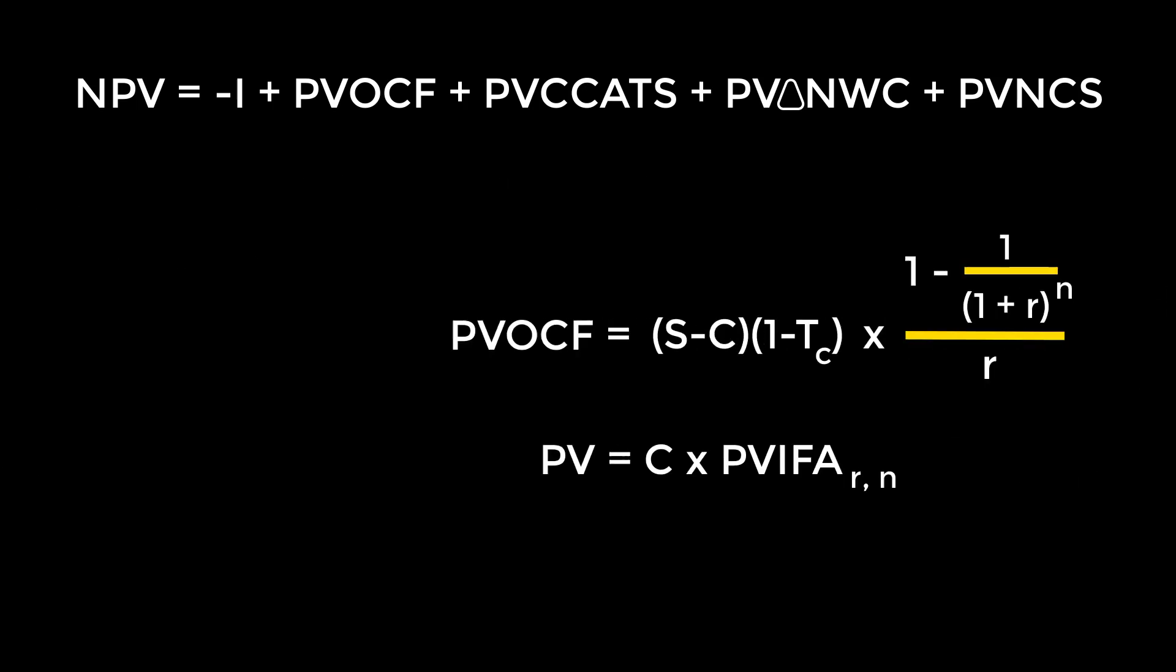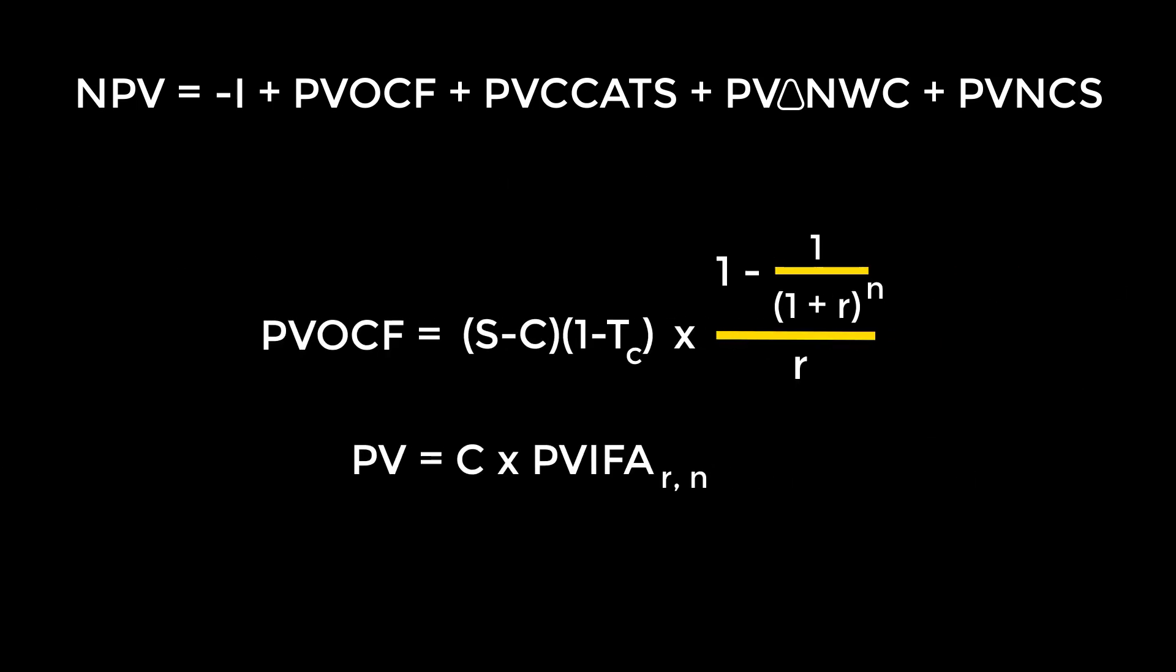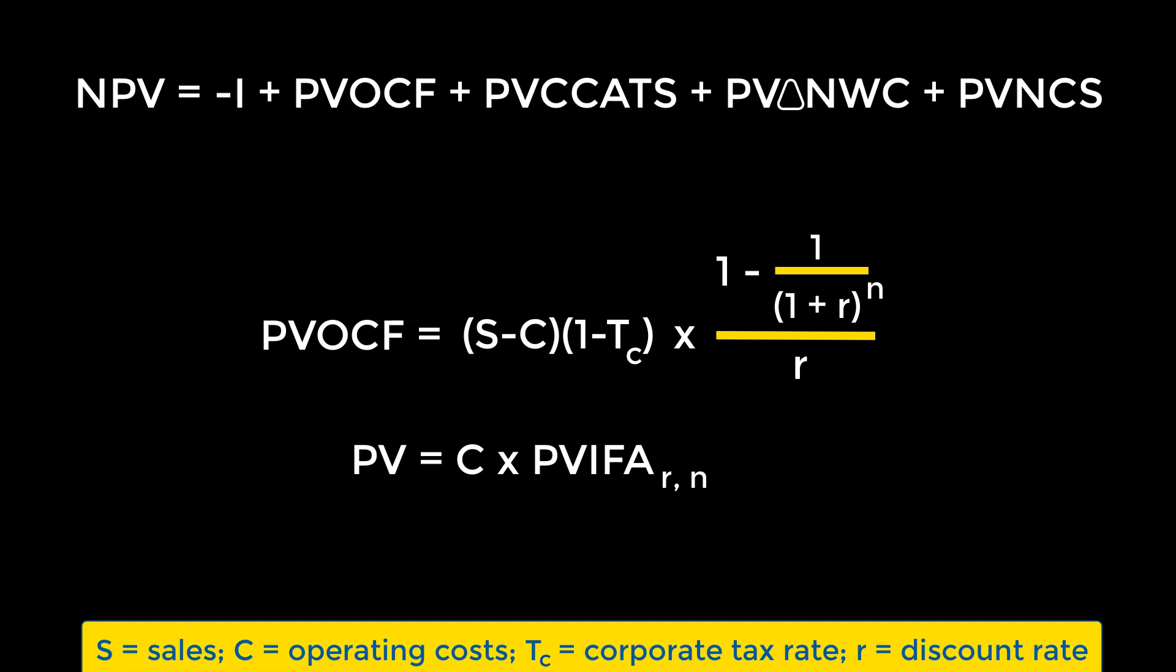Let's discuss PVOCF first. Note that the formula is just the present value of multiple cash flows formula, C times PVIFA, where C has been replaced by S minus C times 1 minus T sub C, where S is for sales, C is for costs, and T sub C is the tax rate. Sometimes, we might be given a figure that represents S minus C already, and at other times we'll have to find S minus C after being given information, similar to the first two problems in the video. Since we've already done those, the next few problems will just give us an S minus C to simplify things. The R value is the discount rate as usual.